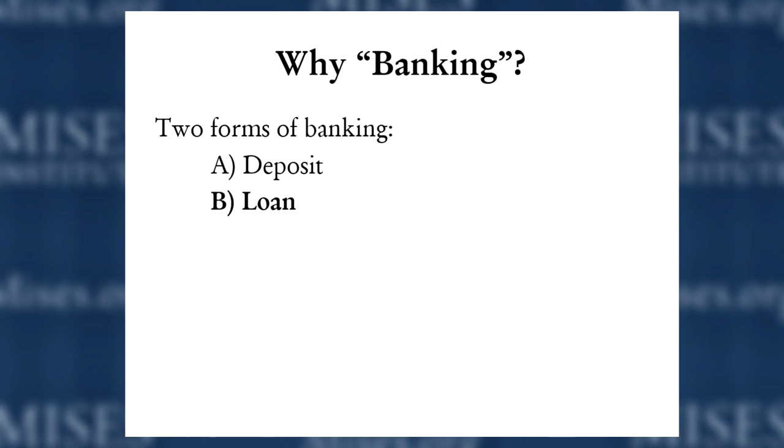The special thing about banking is we've got two fundamental functions — deposit taking and issuing loans — and when they're separate and not intertwined, everything is perfectly fine. But when you mix these two functions together, strange things start to happen. One of the first things is legal difficulties. I have a follow-up lecture tomorrow on Austrian business cycle theory, where the real economic problems of combining these two forms of banking really come to the fore.